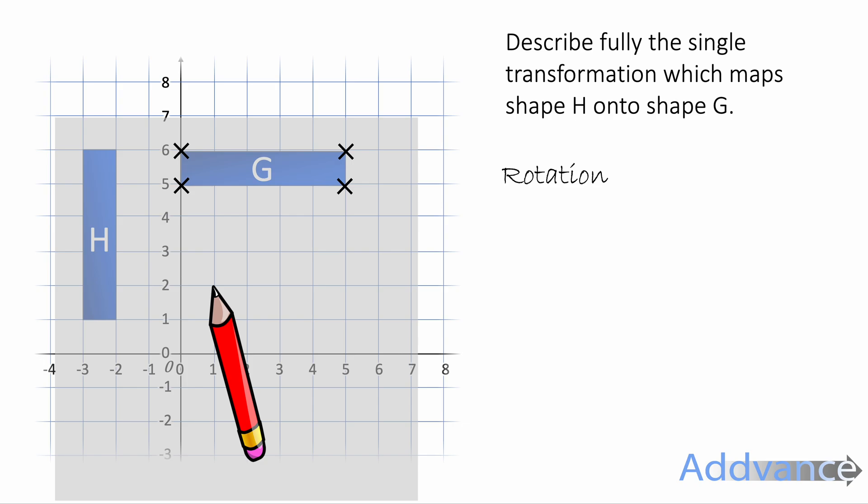So what we've been doing is trial and improvement. So each time trying a different centre of rotation. And if we're getting closer, we use that line to encourage us to go closer and closer. If you're getting further away, it's time to go backwards. And so we're using trial and improvement to find the centre of rotation.